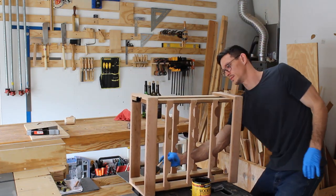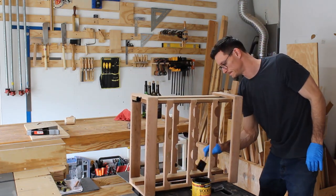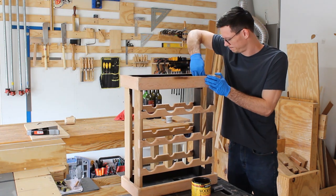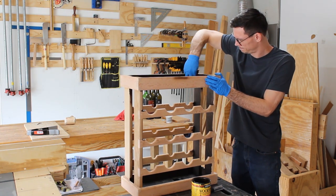Generally speaking, I prefer natural oil finishes over stains and polyurethanes, but since the wine rack needed to match my friend's furniture, I was okay with it.